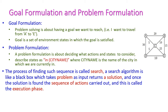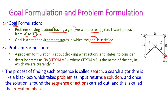The first phase is goal formulation and the second is problem formulation. Goal formulation means having a goal we want to reach — initially we are in a starting state and we need to reach the goal state. A goal is a set of environment states in which the goal is satisfied. We need to satisfy the constraints in all states, and the state that satisfies them is called the goal.